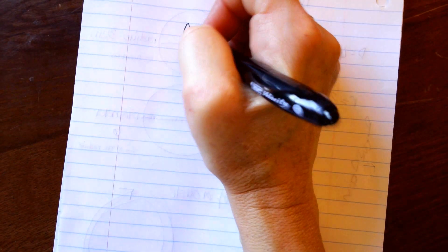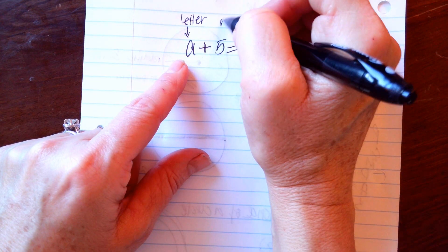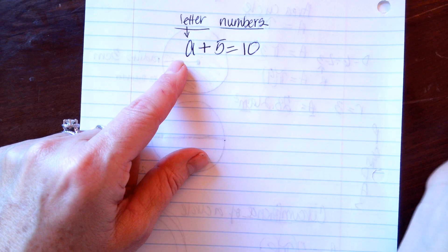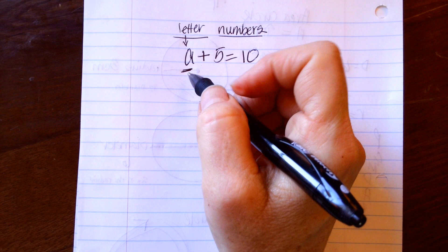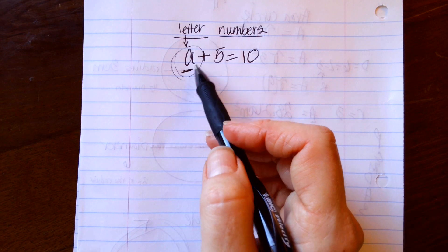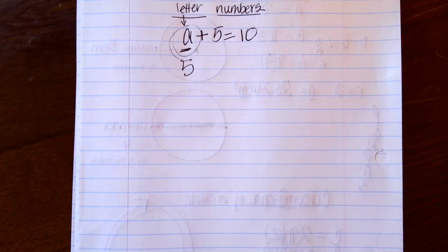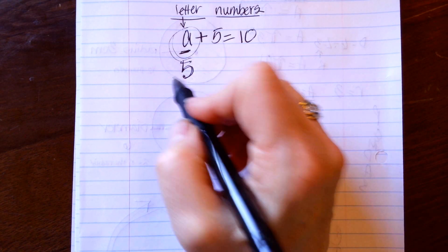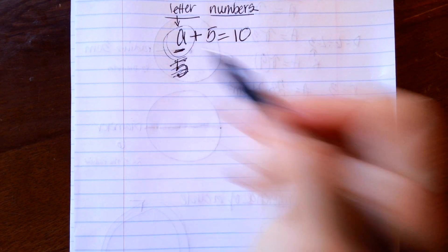For algebra, they use a letter in place of a number — for example, a plus five equals ten. The letter represents a number we don't know yet, and our goal is to solve for it. In this case you can clearly see it's five, but in algebra we have to show our work and follow the steps even if we already know the answer.